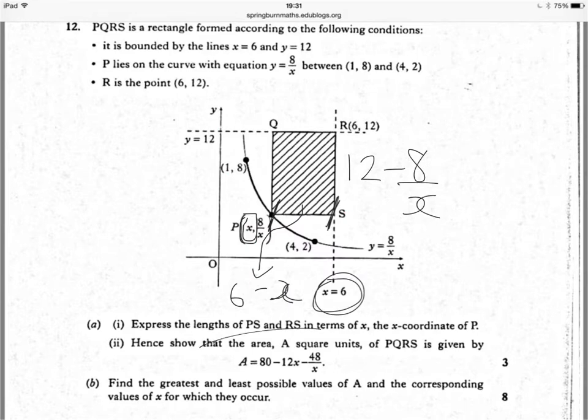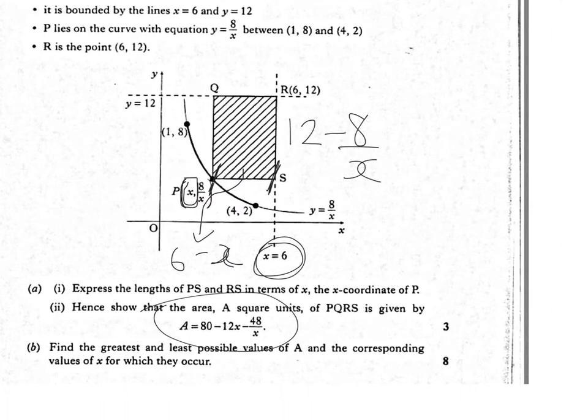Part 2 then says, show that the area can be given by 80 minus 12x minus 48 over x. So that's pretty straightforward. That's just going to be the length times breadth.